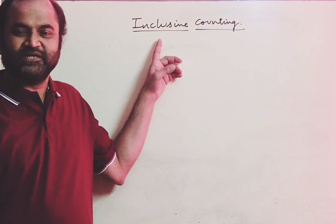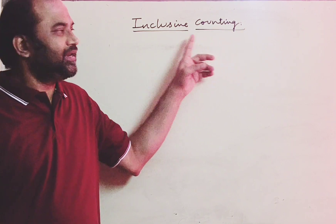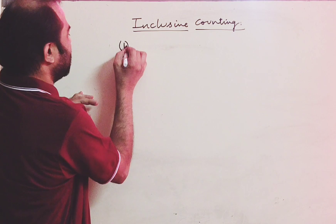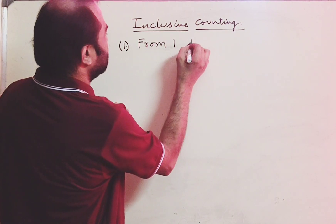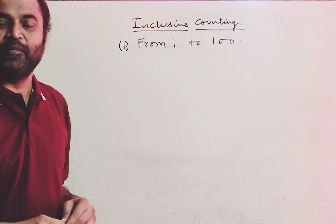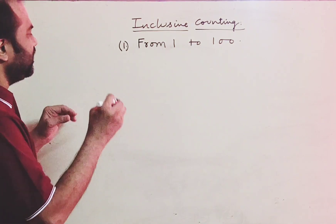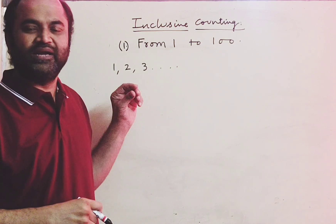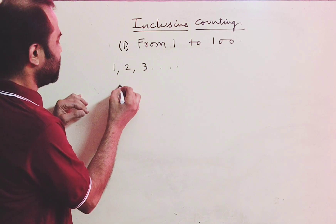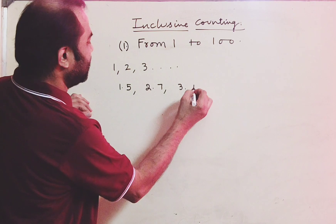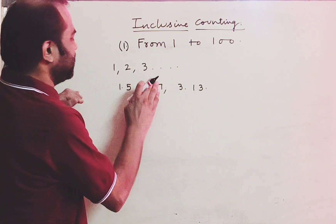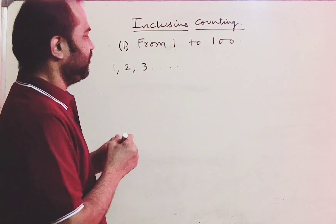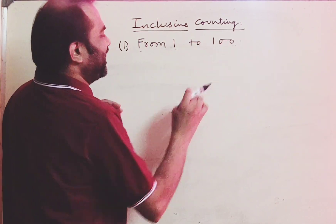In this video I will discuss an important property of counting, namely inclusive counting. Let me start off this principle of inclusive counting with an example. Suppose I ask you: what is the number of numbers from 1 to 100? How many numbers are there from 1 to 100? By numbers I mean integers — natural numbers or whole numbers such as 1, 2, 3, and so on — not decimal numbers like 1.5, 2.7, or 3.13.